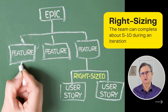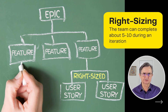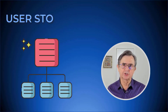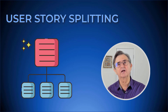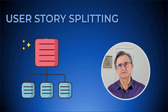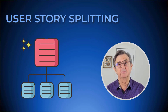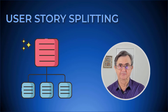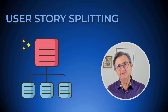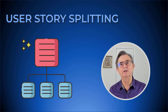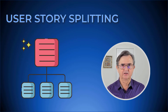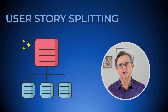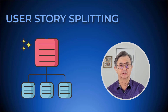If your user stories are larger than that, split them into smaller parts. User story splitting is a critical skill for every member of the Agile team, and it's valuable for representatives of the business community as well. It's especially important for the ITBA. To be effective, story splitting should be a collaborative effort. Everyone needs to work together on intelligent splitting.